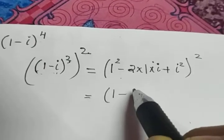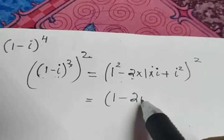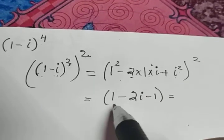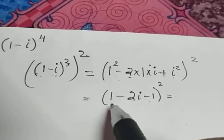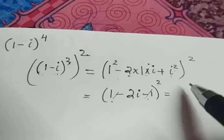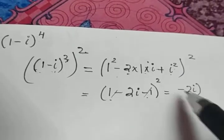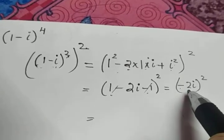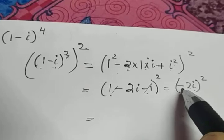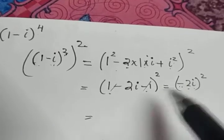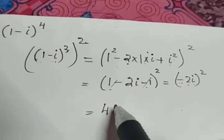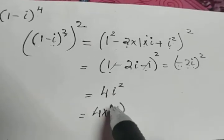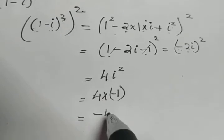That is equal to 1 minus 2 into 1 into i, which gives you 2i, and i squared is minus 1. So this gives you 1 minus 2i minus 1 the whole square. 1 minus 1 get cancelled, giving you minus 2i the whole square. Minus 2i the whole square means minus squared into 2 squared into i squared. Minus squared gives you positive, 2 squared gives you 4, and i squared is minus 1, which gives you the value minus 4.